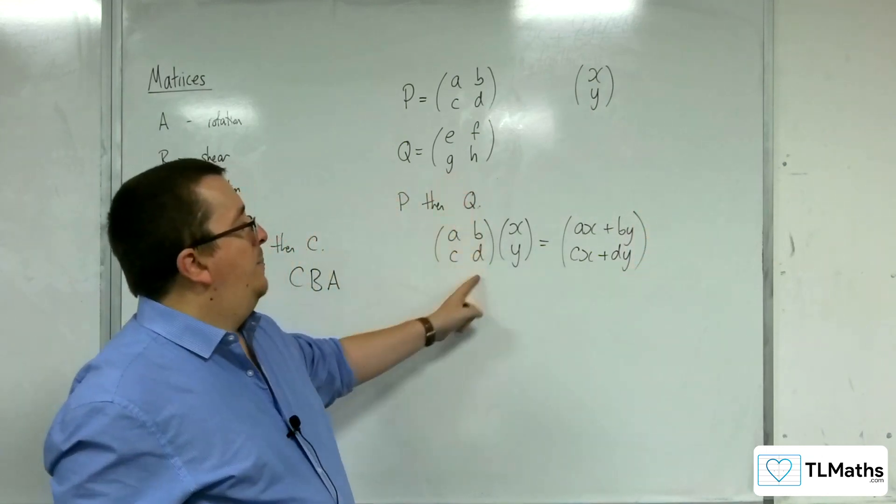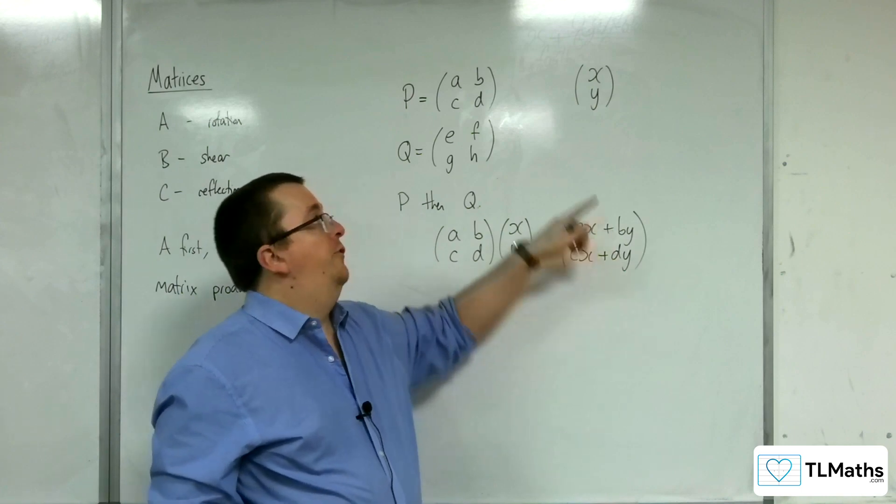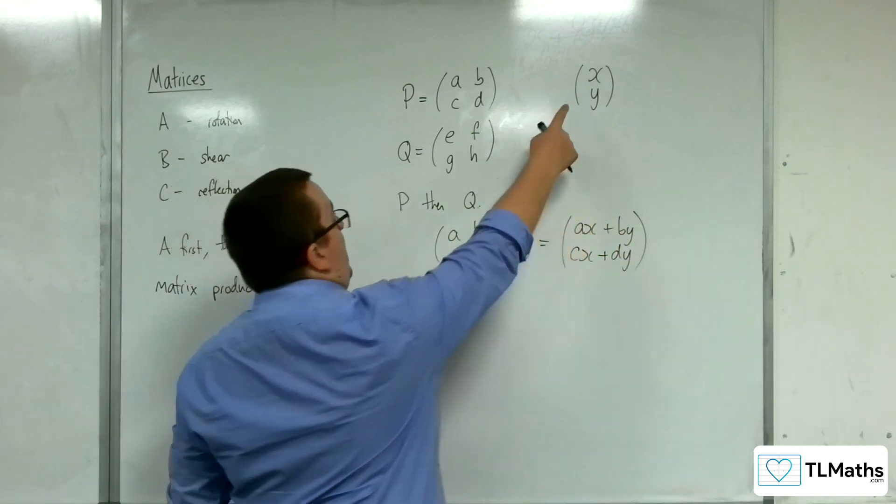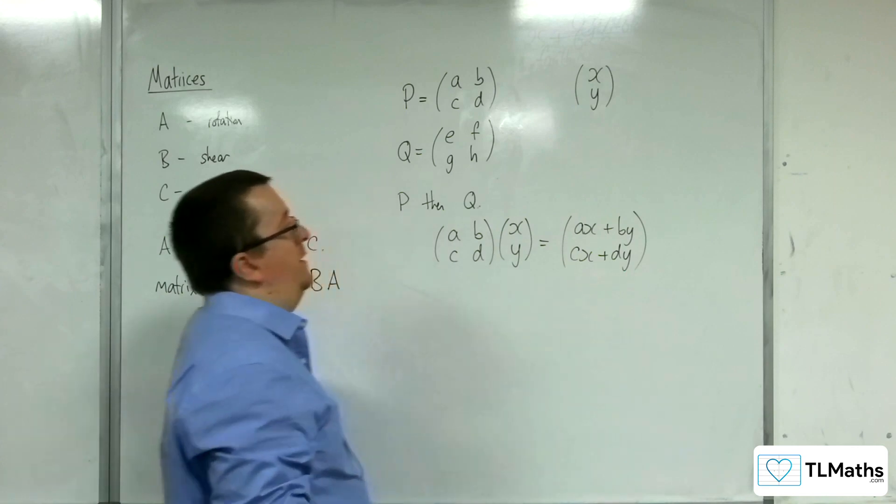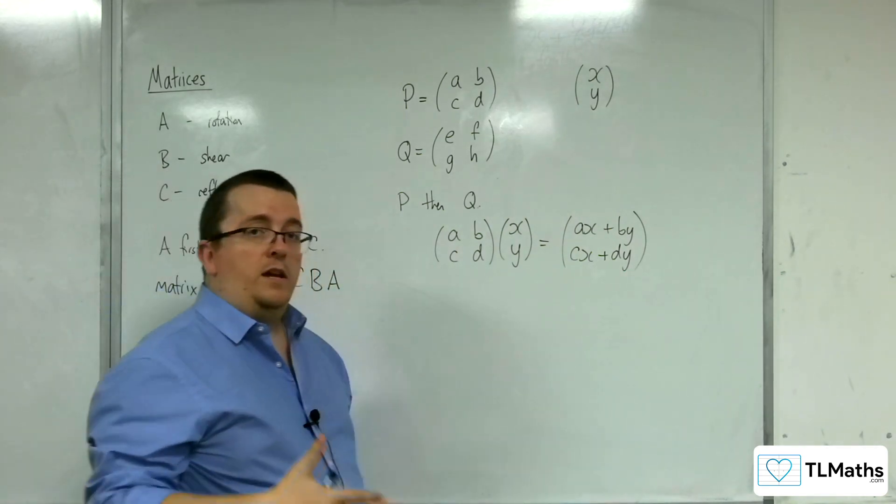So having applied P, these are my new coordinates for this point. So this point has been mapped to these coordinates here, effectively. Then I'm going to apply Q.